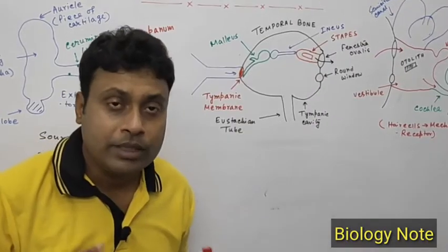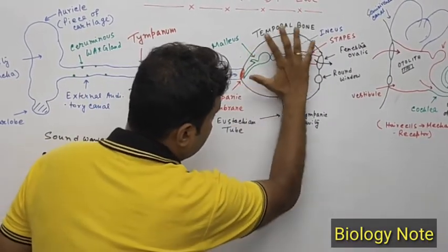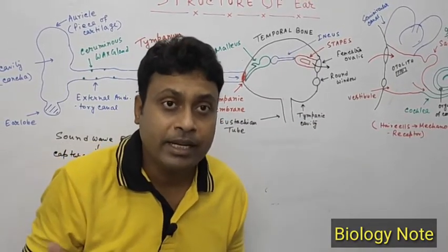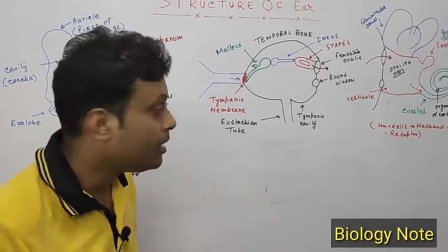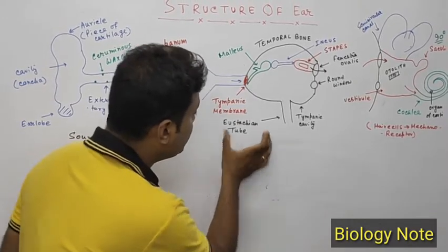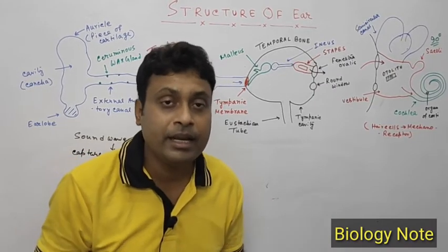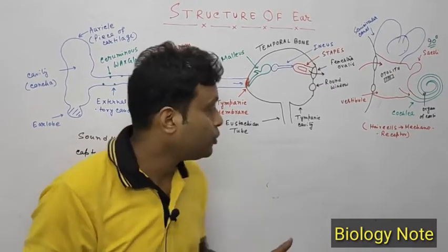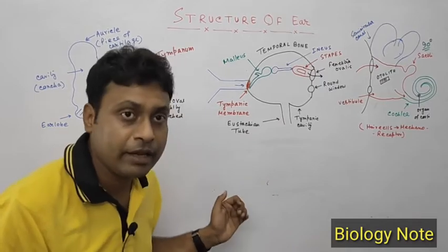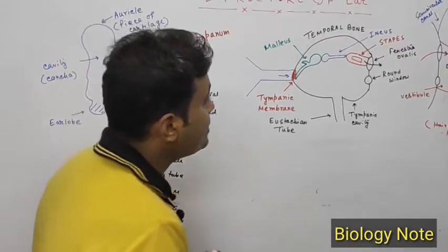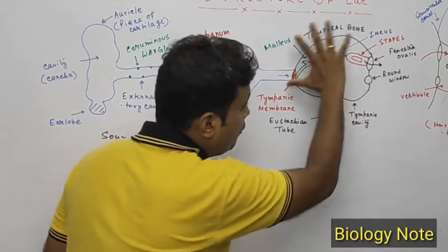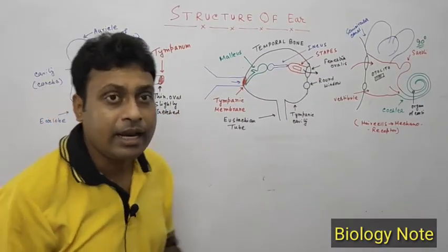The middle ear contains a cavity known as the tympanic cavity, and the structures of the middle ear are present within this tympanic cavity. The tympanic cavity is connected by the eustachian tube, which connects the middle ear with the nasopharynx. The tympanic cavity is also covered by the temporal bone.